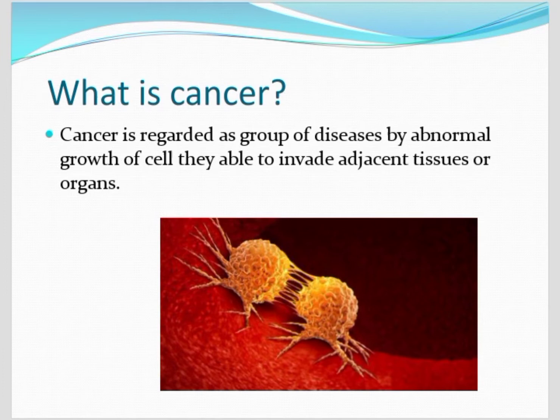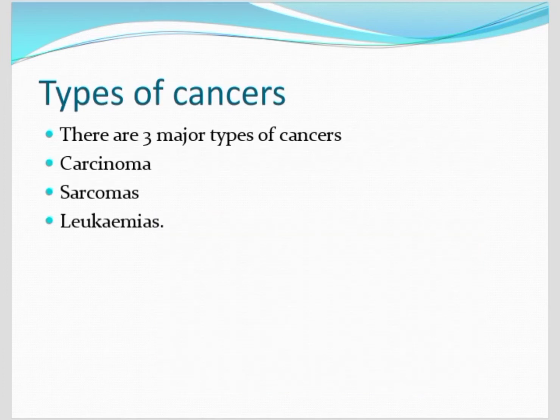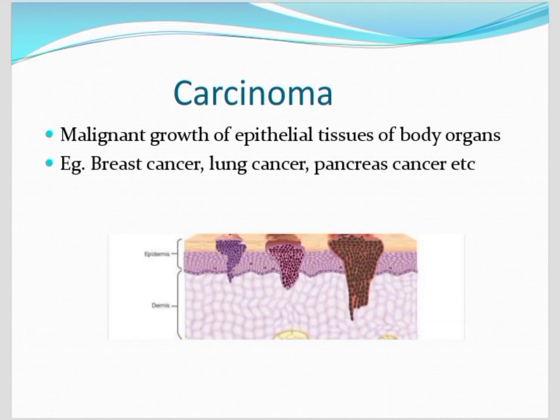These cancers are divided into three types. First, carcinomas — the malignant growth of epithelial tissue. We know epithelial tissue covers the body organs. Examples include breast cancer, lung cancer,